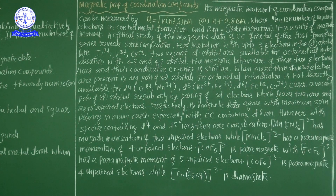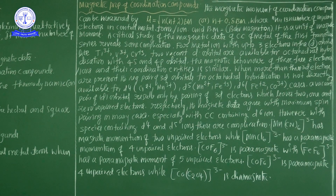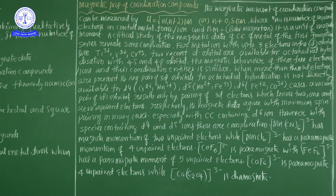When more than 3 d-electrons are present, the required pair of 3d orbitals for octahedral hybridization is not directly available. For example, with d4 configurations — Cr²⁺, Mn³⁺ — and d5 configurations — Mn²⁺, Fe³⁺ — and d6 configurations — Fe²⁺ — a vacant pair of d orbitals results only by pairing of 3d electrons. The magnetic data agree with maximum spin pairing in many cases, especially with coordination compounds containing D6 ions. However, with species containing D4 and D5 ions, there are complications.